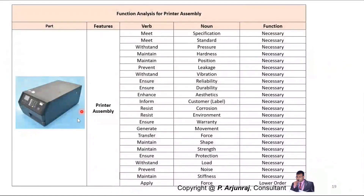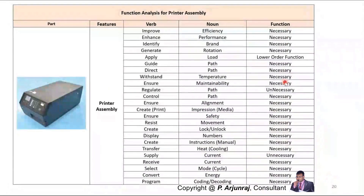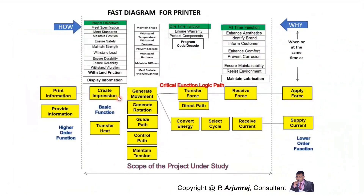This is for a complete printer assembly — it will have many parts, so I am going to club them. I did not make this as a basic assembly here; I mentioned what is the necessary function and what is the unnecessary function. The basic function of a printer is to create an impression. When you are creating an impression, you are also going to transfer heat. The purpose is to print information and provide information — so this is the outcome.